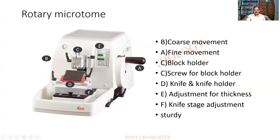This picture is of paramount importance — students should follow it meticulously as questions may be asked about it. This is a very sturdy modern rotary microtome from Leica; there are two versions — semi-automatic and automatic. The automatic version has a motor attached, and once switched on it advances through the set distance automatically.